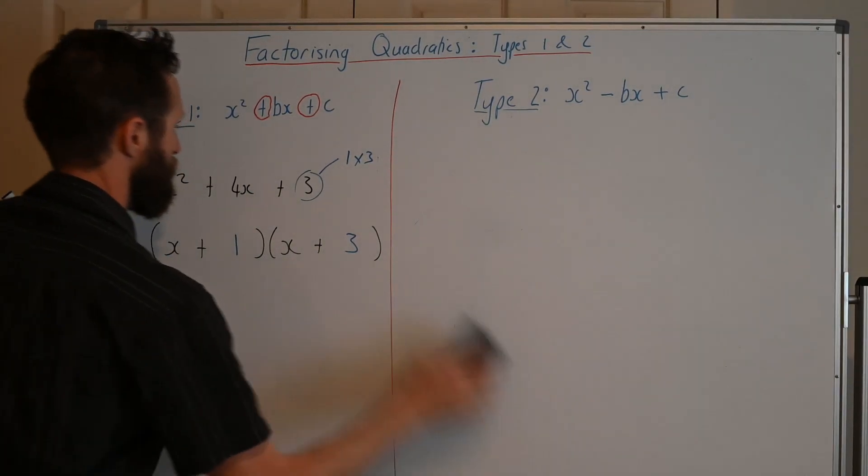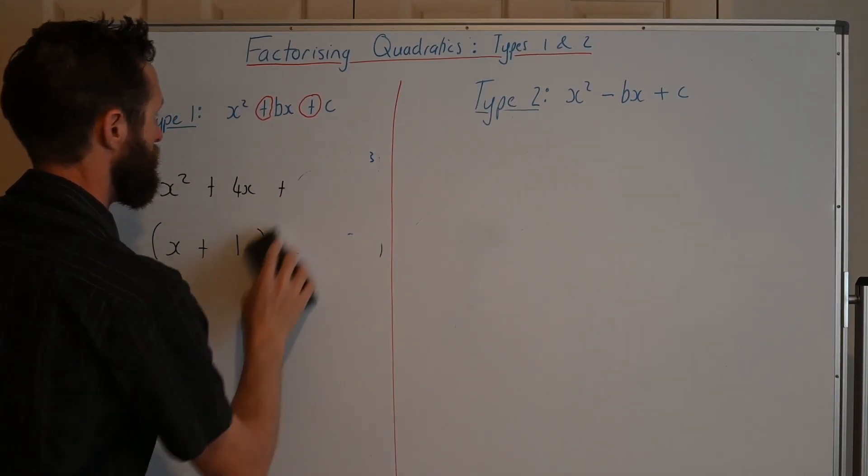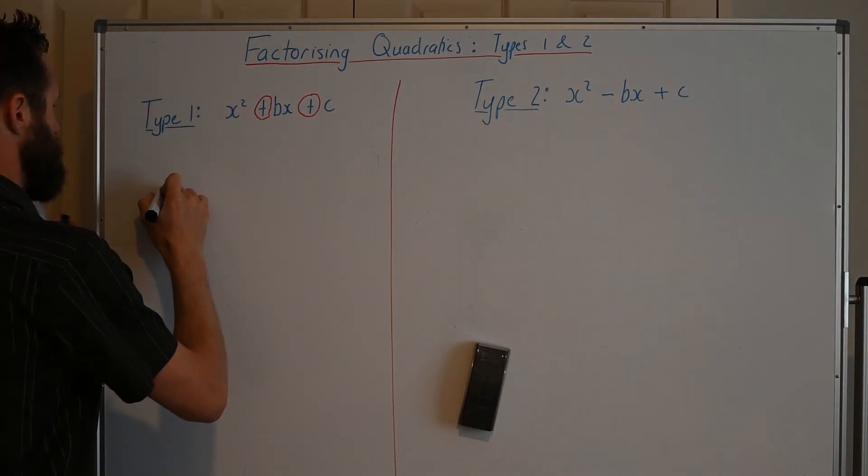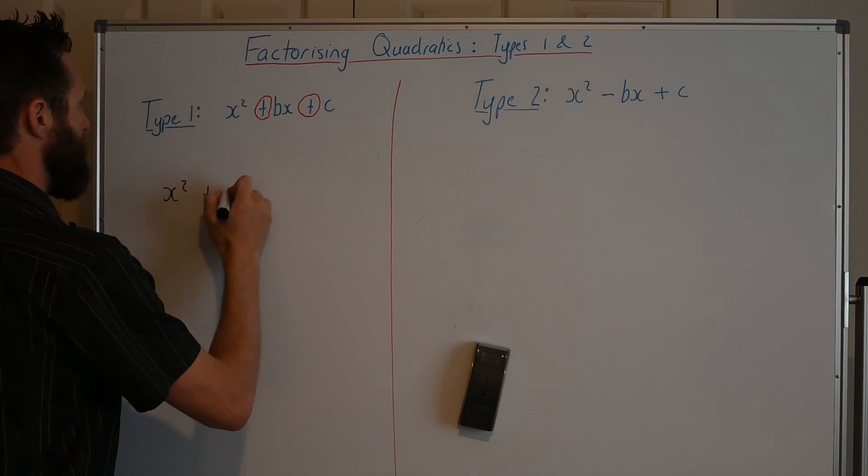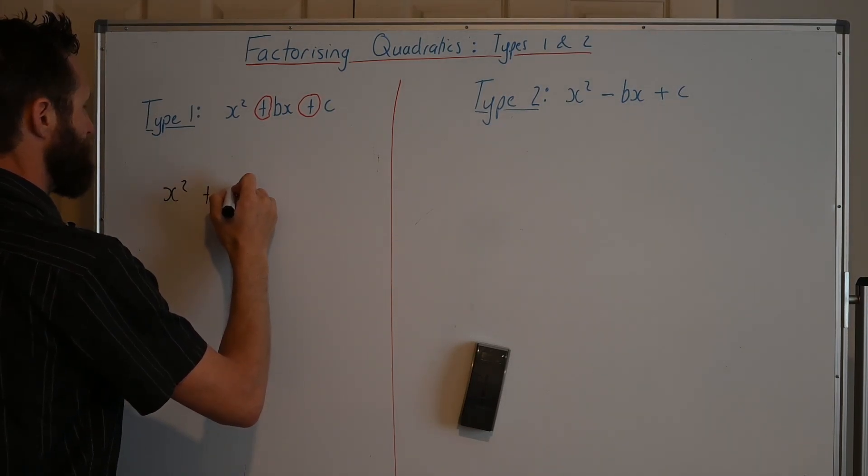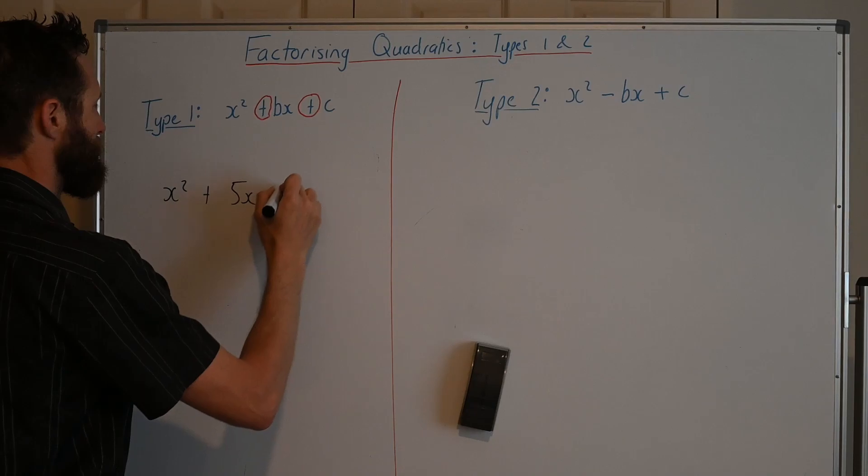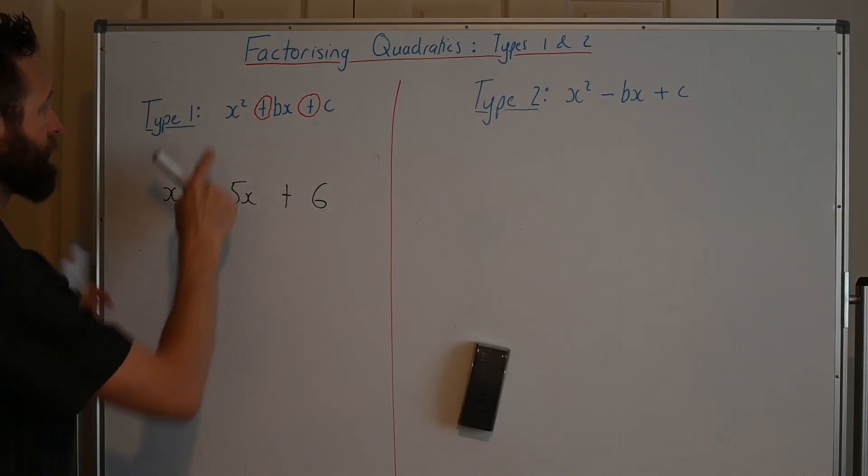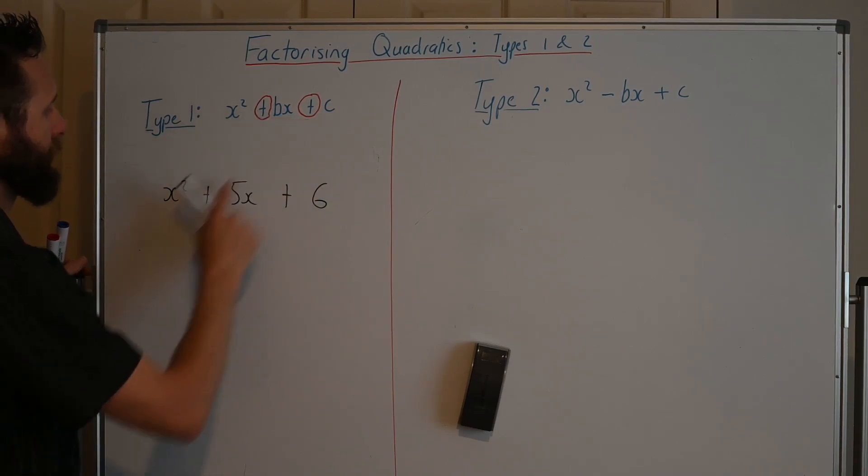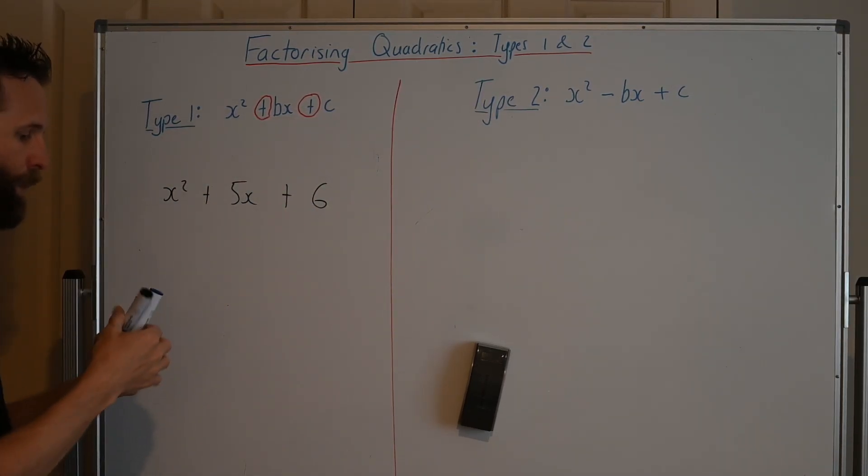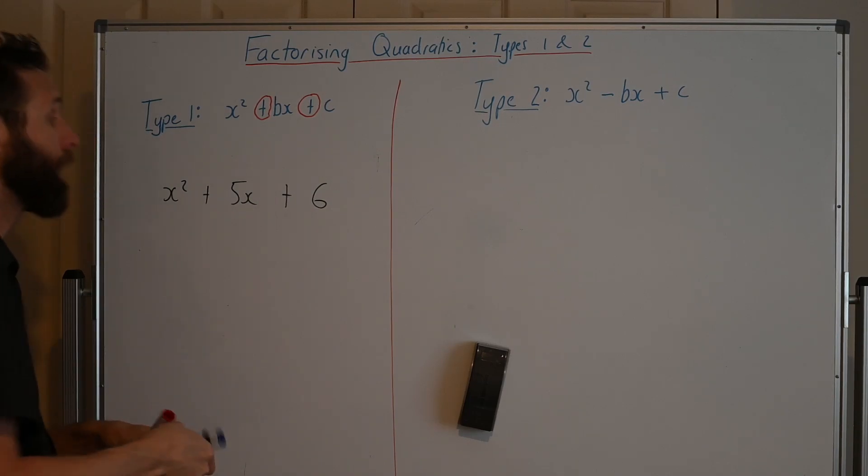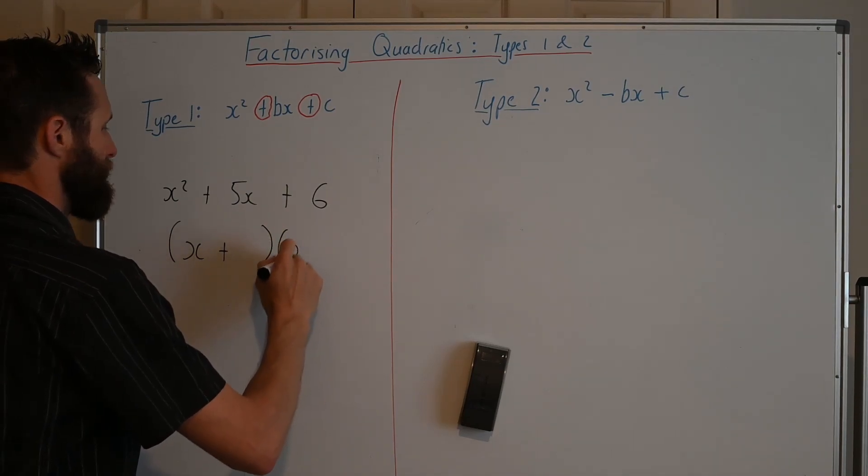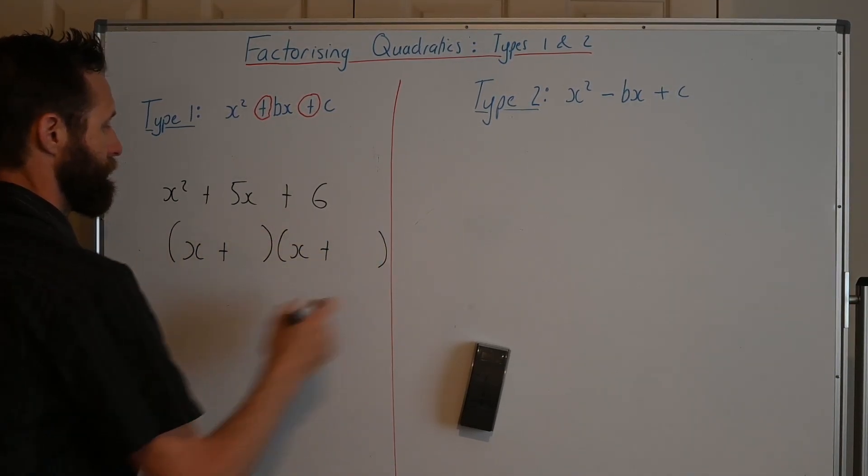Let me give you another example. Let's say we've got something like x² + 5x + 6. You see that it's type 1 because we've got a plus and a plus, a plus 5x and a plus 6. So it's type 1, which means we know straight away that it's (x + something) in a bracket and then (x + something else) in a bracket, right?